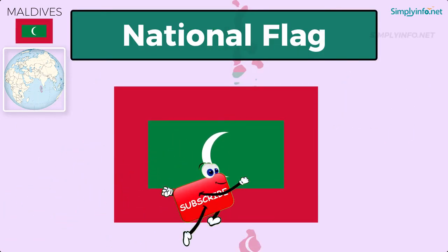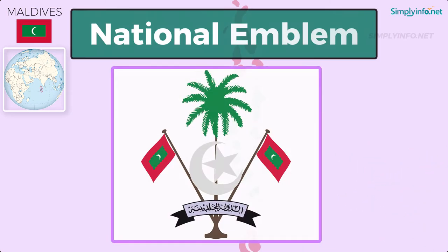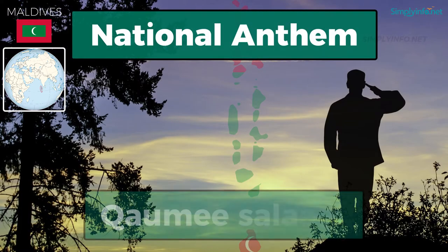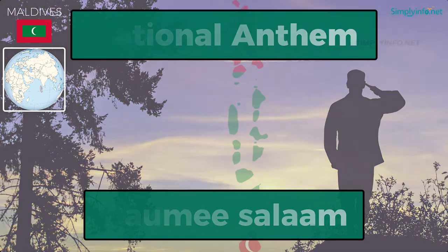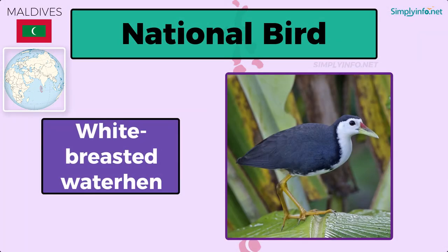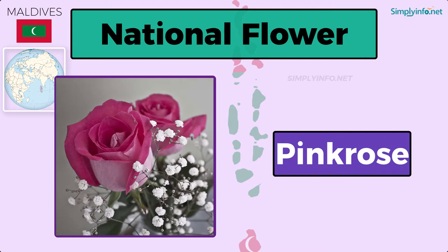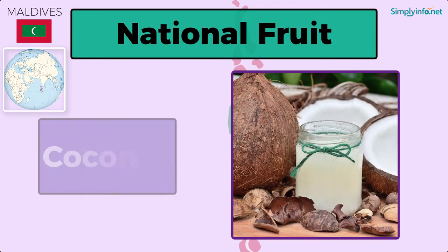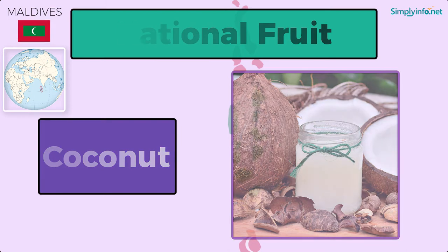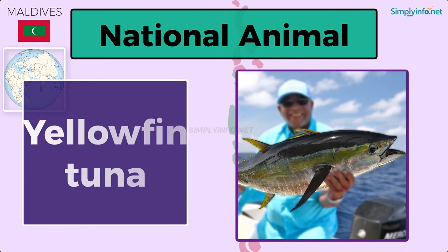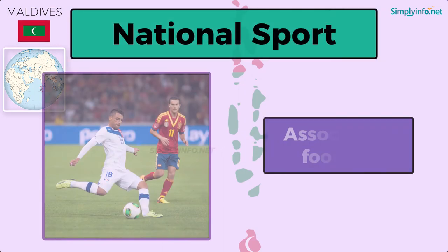National Flag. National Emblem. National Anthem: Kwame Salaam. National Bird: White Bristed Water Hen. National Flower: Pink Rose. National Fruit: Coconut. National Tree: Coconut Palm. National Animal: Elephant Tuna. National Sport: Association Football.